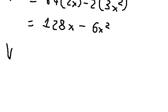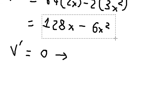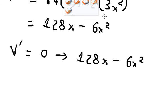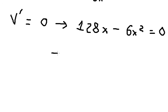Now we need to find the critical points. V prime equals zero, so 128x minus 6x squared equals zero. Now we need to find the solution of x, so we have x equals 0 and x equals 64 over 3.